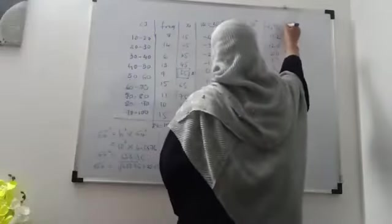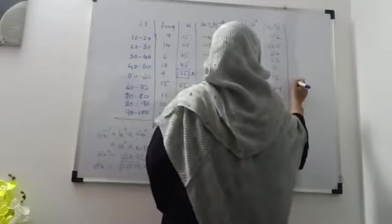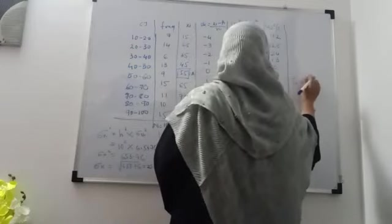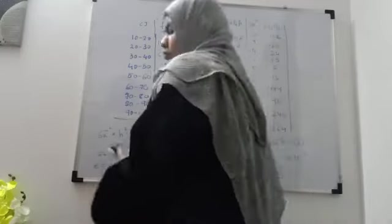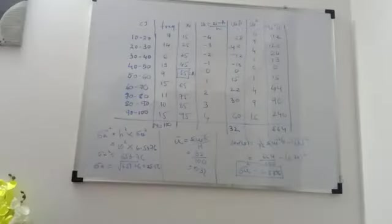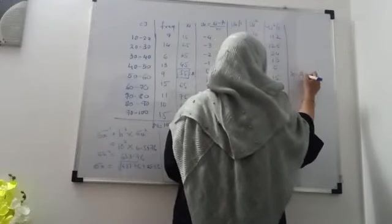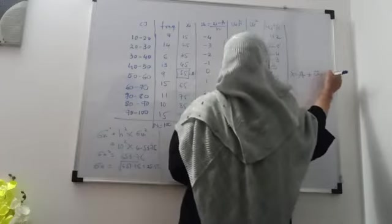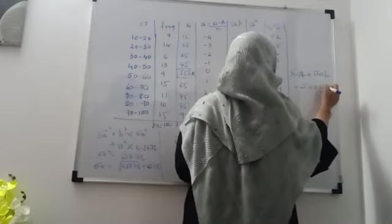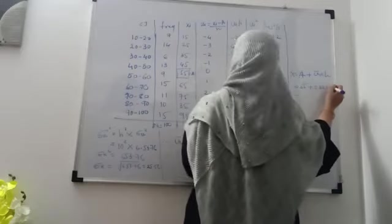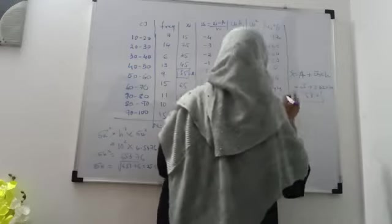You can also find the mean of X: x̄ = A + Ū × h = 55 + 0.32 × 10 = 55 + 3.2 = 58.2. So x̄ = 58.2. This completes the calculation of variance using change of origin and scale.